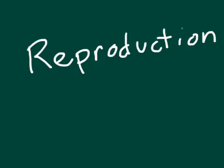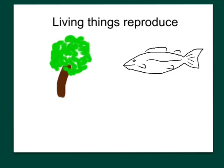Our final characteristic of living things is reproduction — the ability to produce offspring. Living things can always reproduce. This tree will reproduce by producing hundreds, thousands of seeds. And the fish here will reproduce by producing eggs, which are then fertilized. So living things reproduce to produce offspring.